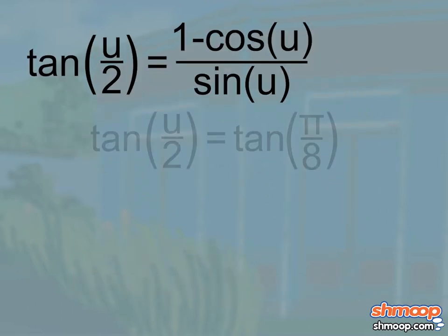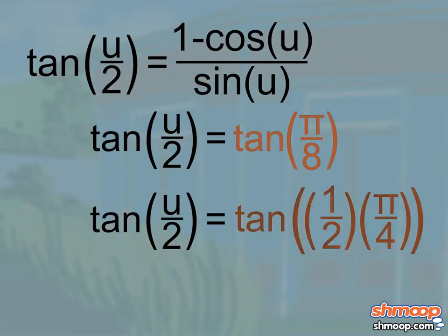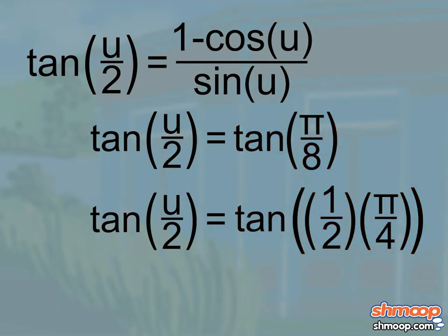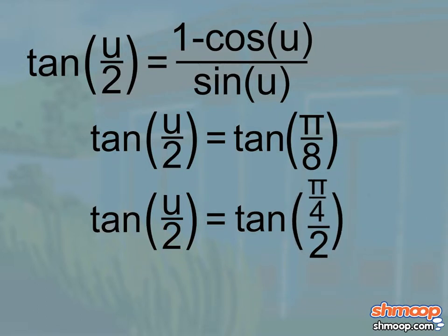First of all, we can see that the tangent of pi over eight can be rewritten as one-half times pi over four. If we do this, we can get rid of the denominator two in our formula. Then if we substitute pi over four in for u, we get the following.